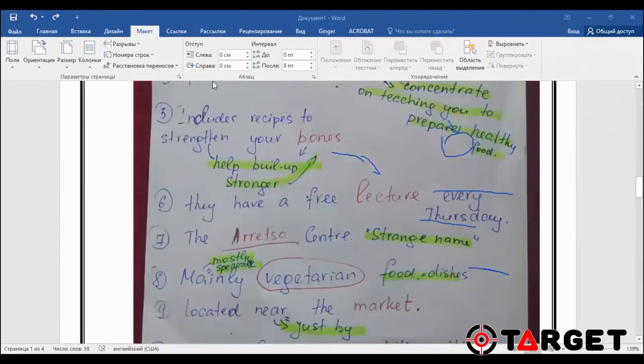Question number five, includes recipes to strengthen your bones. In red, the answer is bone. What helped me? The sentence: it helps to build up or make your bones stronger. You see, stronger is the paraphrase of the word strengthen. But strengthen is a verb and stronger is an adjective. In the track, they said make your bones stronger. So I just found a match. That's why I have written bones.